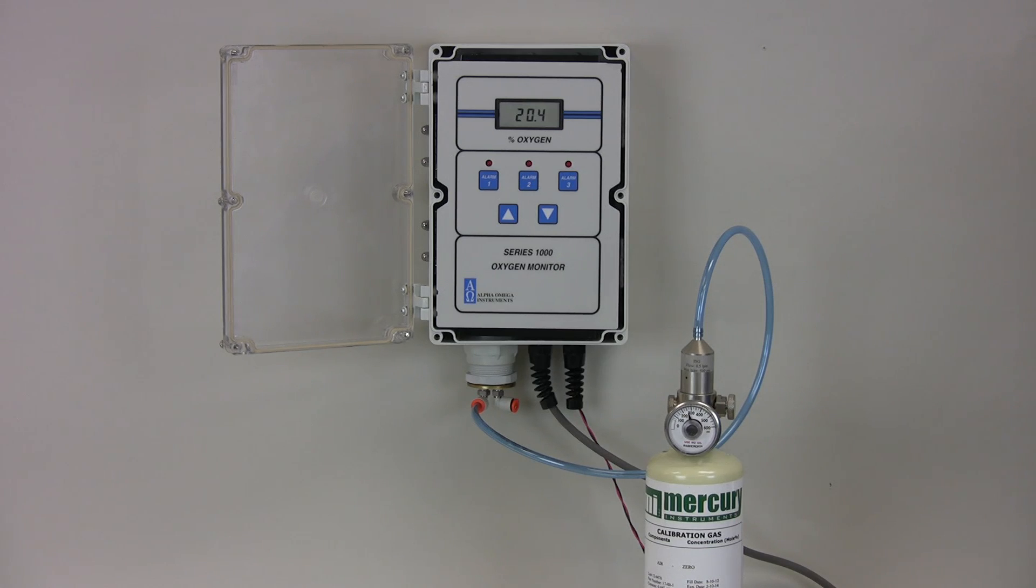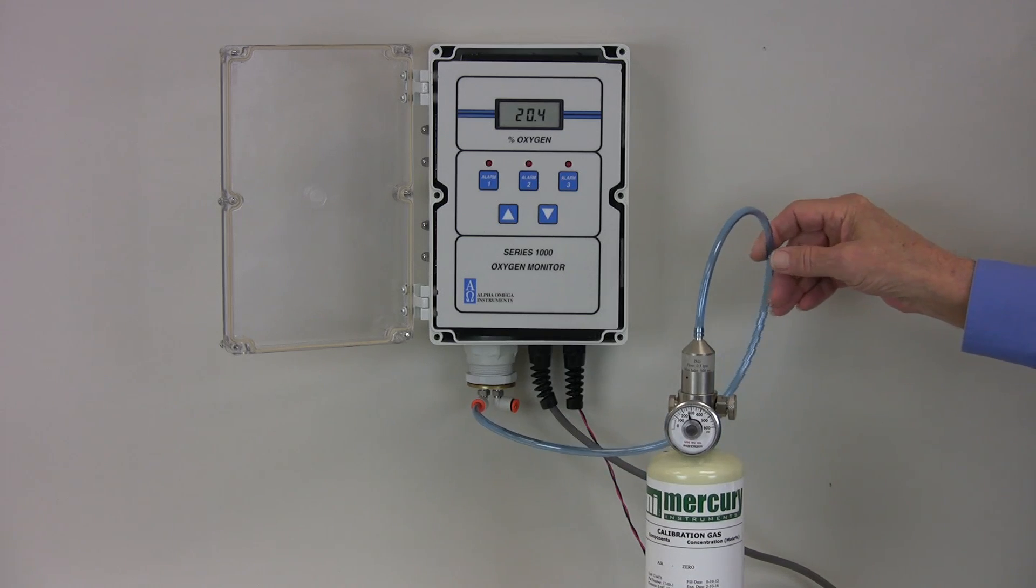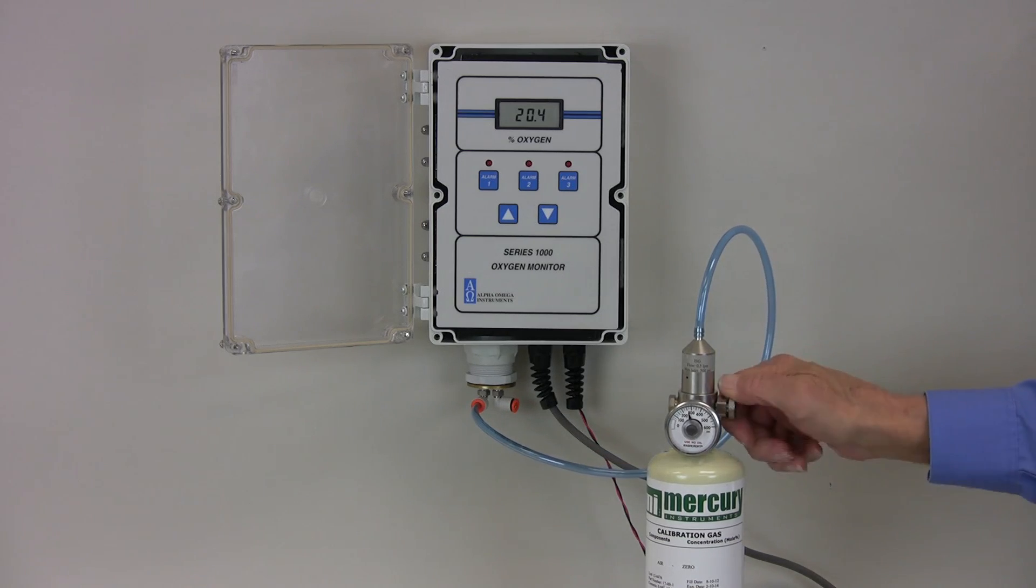As seen here, we have already connected the fixture's inlet to the cylinder of clean, compressed air. Open the tank valve to allow the compressed air to flow through the tube and aspirate the sensor.